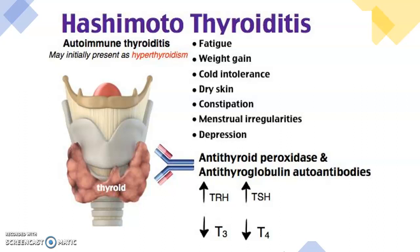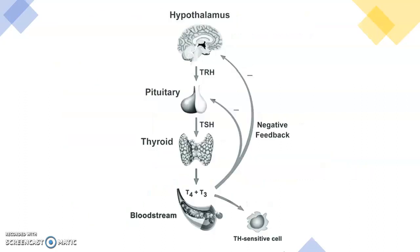Hashimoto's presents with a 10-to-1 female-to-male ratio, typically between ages 30 to 50. It's an autoimmune disease where autoimmune antibodies destroy the thyroid tissue. In the bloodstream you'll see low T3 and T4 because these antibodies are destroying the thyroid tissue. The body tries to compensate through negative feedback by cranking out more thyroid stimulating hormone and thyrotropin releasing hormone, because it recognizes those levels are low.